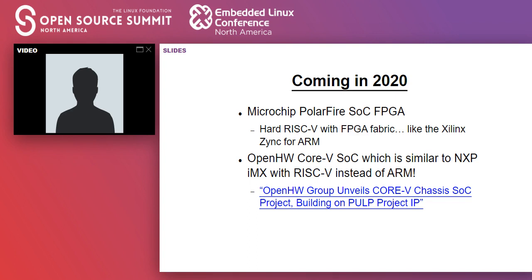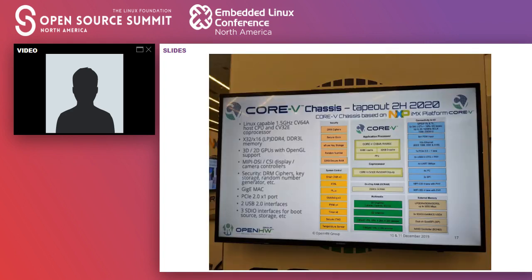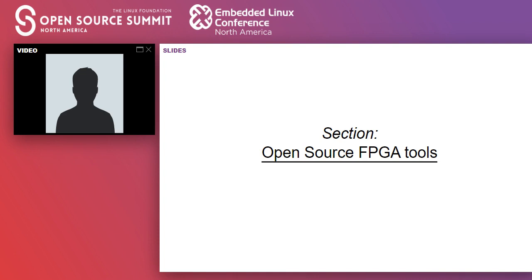Another exciting thing: back at the RISC-V Summit in December, there was an announcement from the OpenHW Group — an industry organization with companies like NXP and Silicon Labs — working on open source designs to build a SoC called the Core-V Chassis SoC. Think of it as an NXP i.MX chip with the ARM core ripped out and a RISC-V core dropped in. It's going to tape out in the second half of this year as a test chip, with a limited run of dev boards. If NXP pulls this as an actual product, we could see sub-$100 dev boards with a real hard RISC-V SoC.